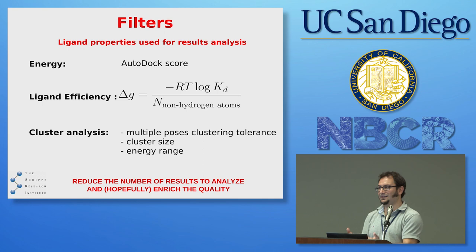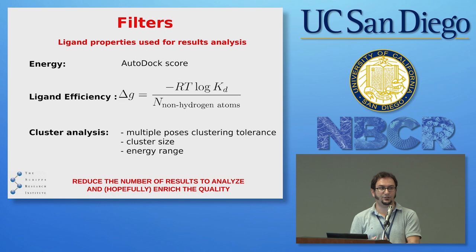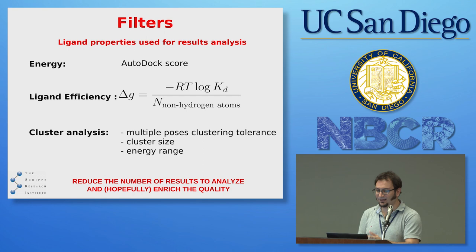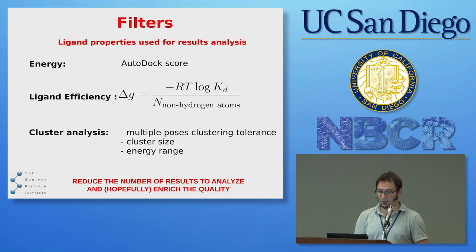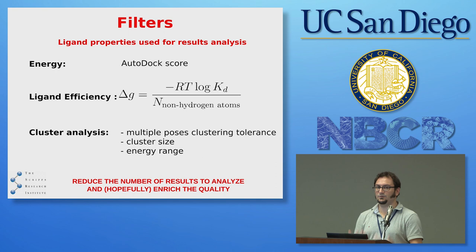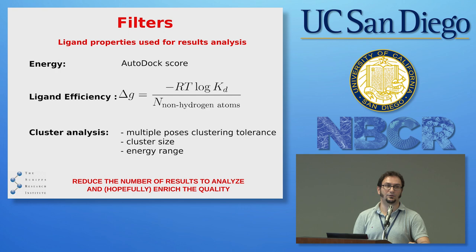Another popular concept is ligand efficiency. It's actually calculated experimentally — you take your binding affinity, divide it by the number of heavy atoms, and get the ligand efficiency: essentially the binding contribution per atom. Since we're not doing an experiment, you can take the docking score divided by the number of heavy atoms to get a predicted ligand efficiency. Another approach, especially in AutoDock, is clustering analysis — you dock multiple times, collect many poses, and focus on results with consistency. If in 80 out of 100 runs you find the same pose, that's very likely the best answer.